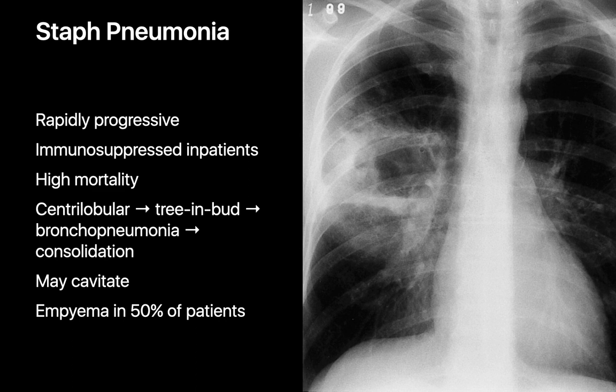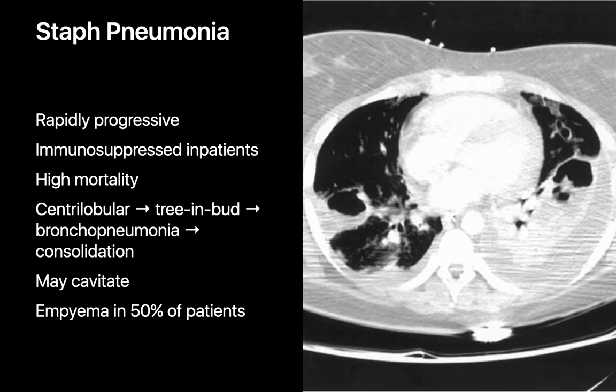Consolidative staph pneumonias are rapidly progressive lung infections that immunosuppressed individuals are more prone to develop, and they're associated with a high rate of mortality. They can evolve quickly from centrilobular and tree-and-bud patterns to multi-acinar opacities and bronchopneumonia to consolidation. Consolidative staph pneumonias can cavitate and are associated with empyema in many cases.